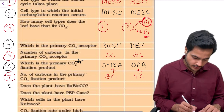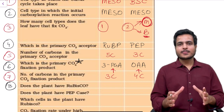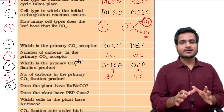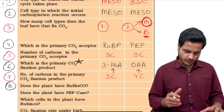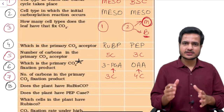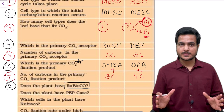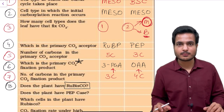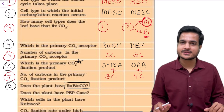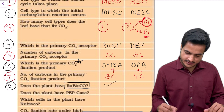The eighth question asks whether the plant has Rubisco. Rubisco is present everywhere Calvin cycle takes place, and Calvin cycle occurs in all plants. Therefore Rubisco is present in all plants — C3, C4, or CAM. It is the most abundant protein in the whole biosphere. The most abundant protein in the animal world is collagen. So yes, all these plants have Rubisco.